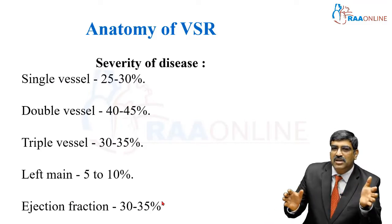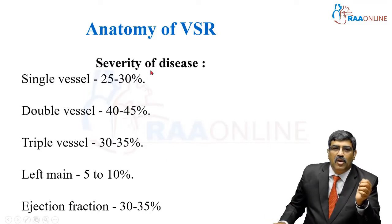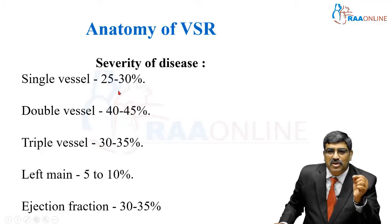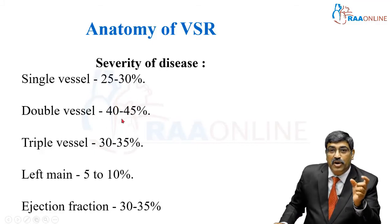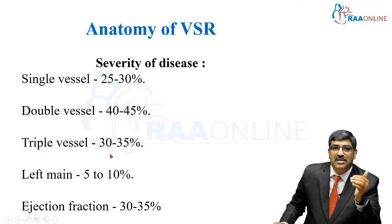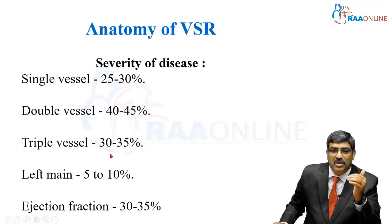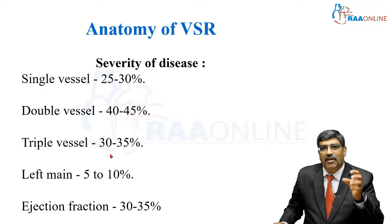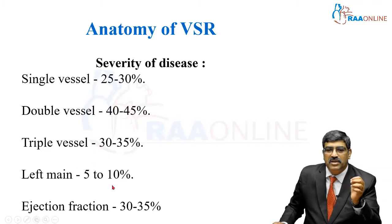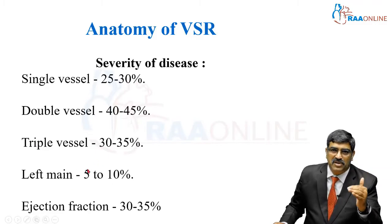Coming to the severity of the disease and how the coronaries are involved: mostly it is single vessel in 25 to 30% of patients, double vessel in 40 to 45%, triple vessel disease in 30 to 35% of patients, and left main involvement is seen in 5 to 10% of patients.